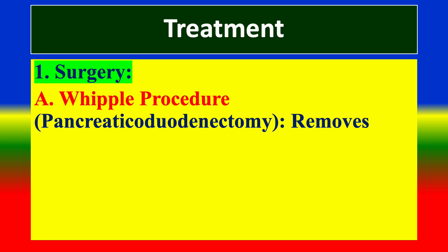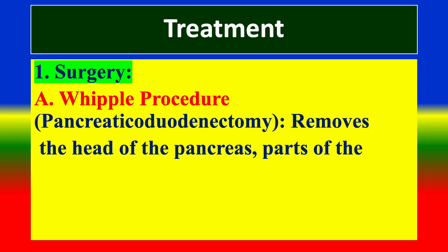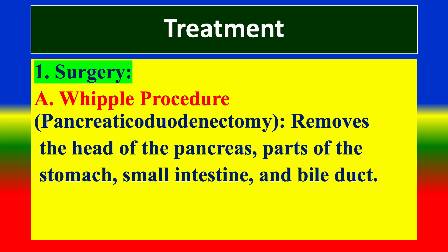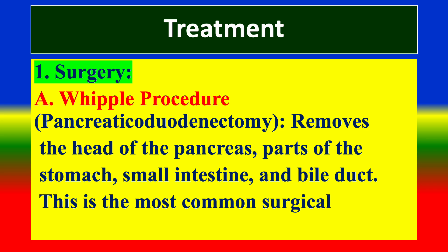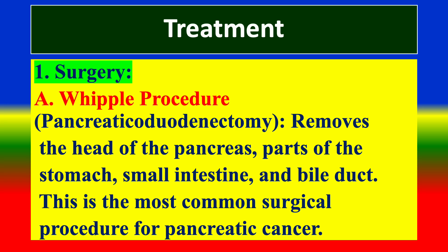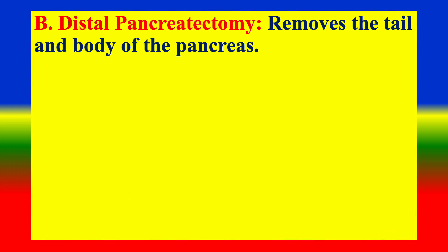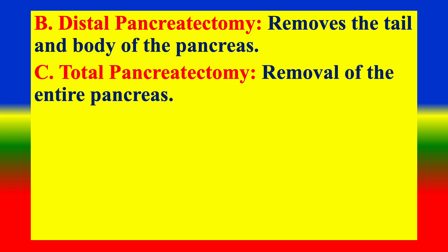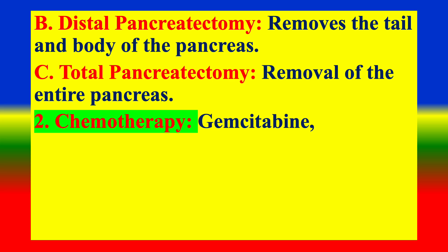Treatment options include surgery. The Whipple procedure (pancreaticoduodenectomy) removes the head of the pancreas, part of the stomach, small intestine, and bile duct — this is the most common surgical procedure for pancreatic cancer. Distal pancreatectomy removes the tail and body of the pancreas, while total pancreatectomy involves removal of the entire pancreas.